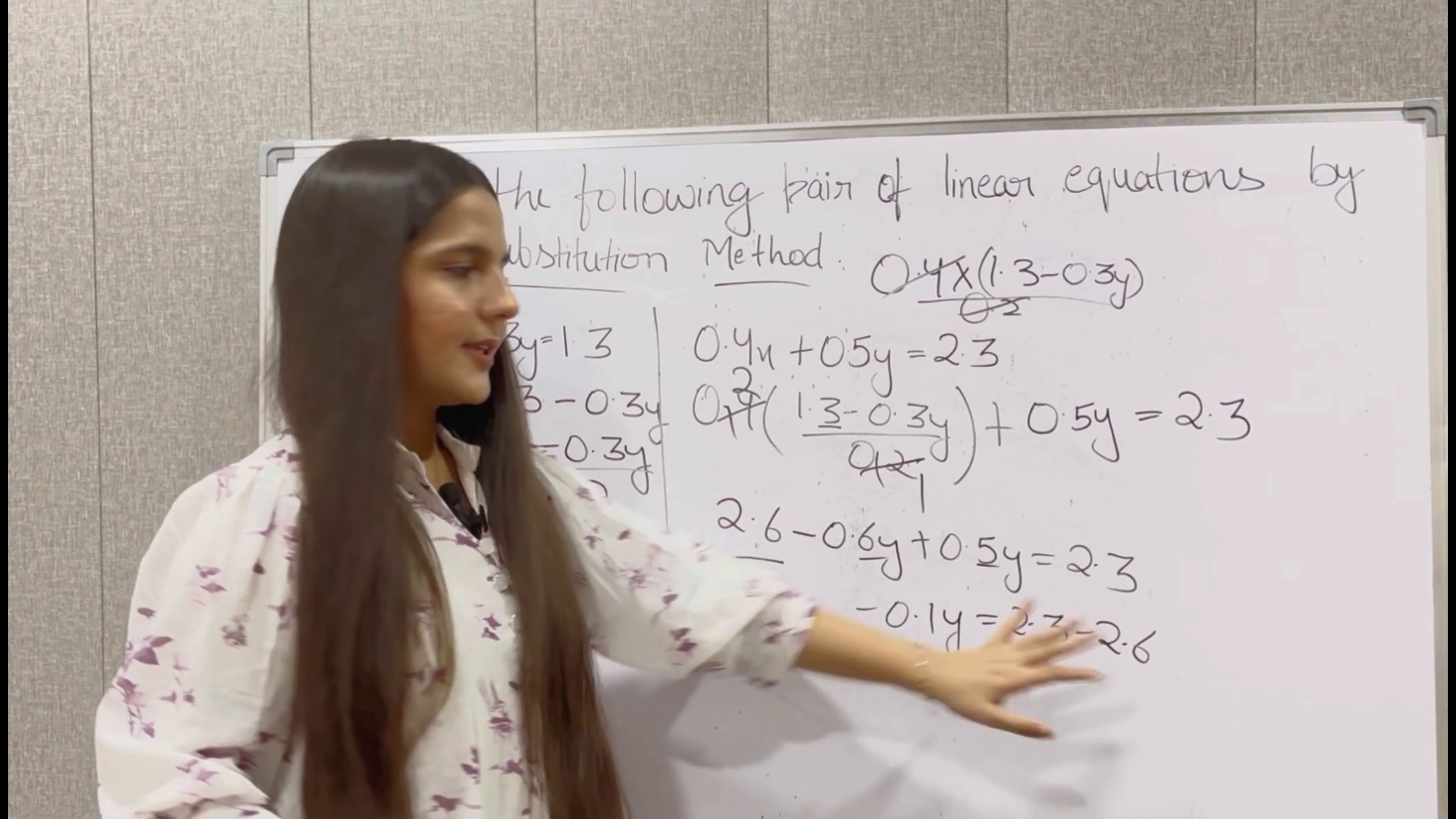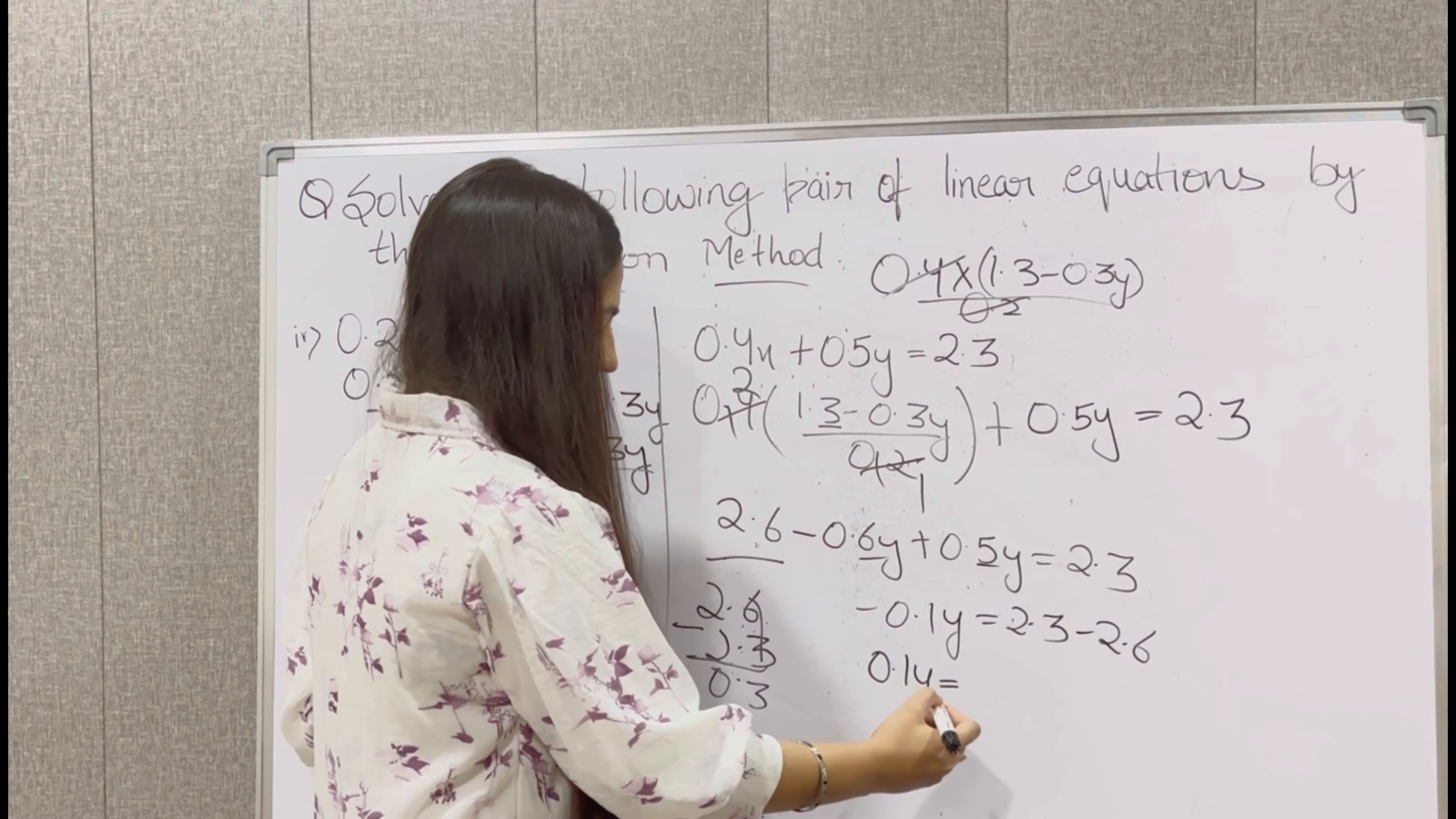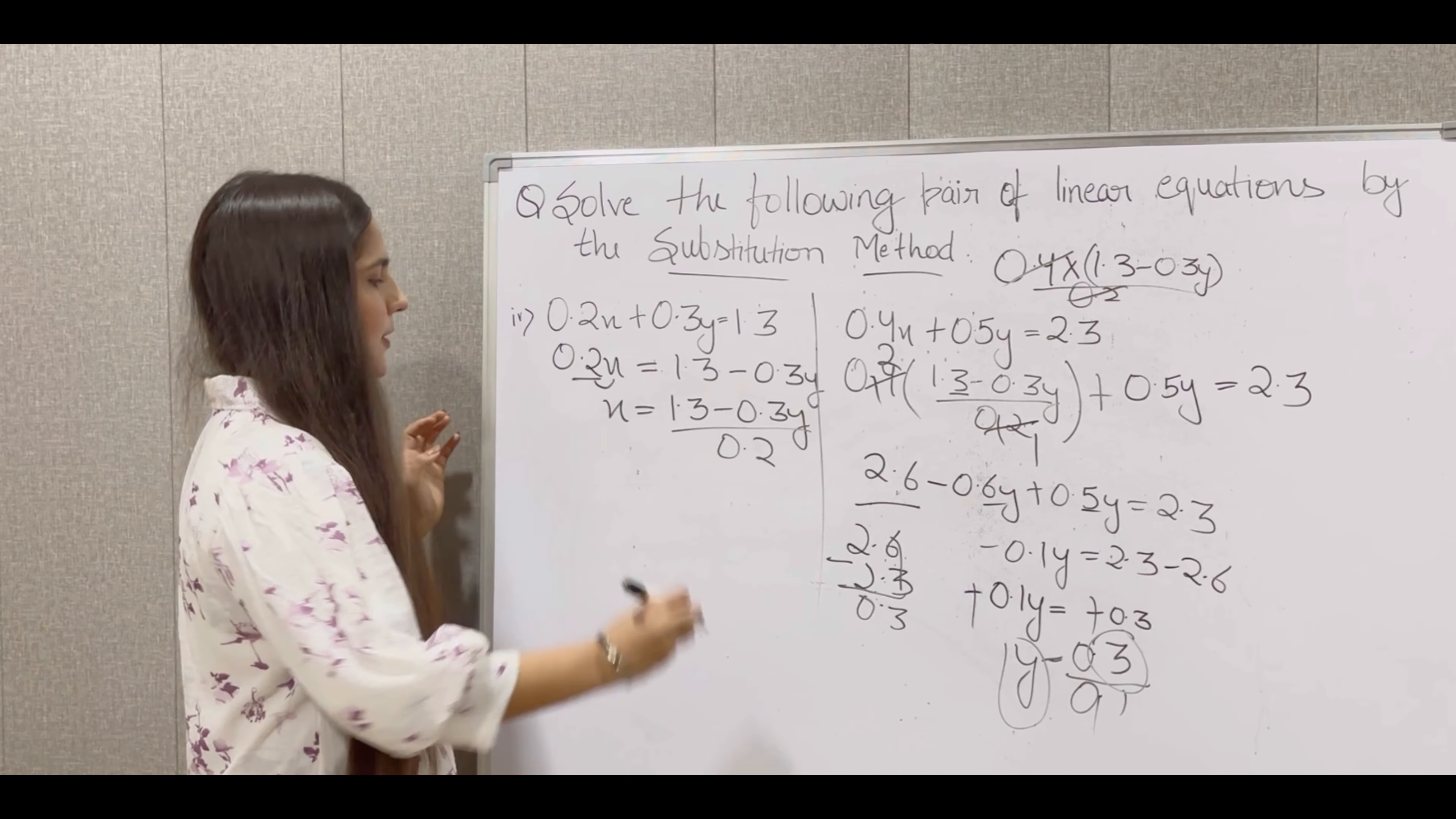Now solve, plus minus becomes minus. 6 minus 5 is 1, so negative 0.1y is equal to 2.3. This plus will go to minus, minus 2.6. Now we need to subtract it. So 2.3 minus 2.6. 2.6 is greater than 2.3, so minus. Negative 0.1y is equal to negative 0.3. Minus and minus cancel. So y is equal to 0.3 divided by 0.1. So y's value is 3.